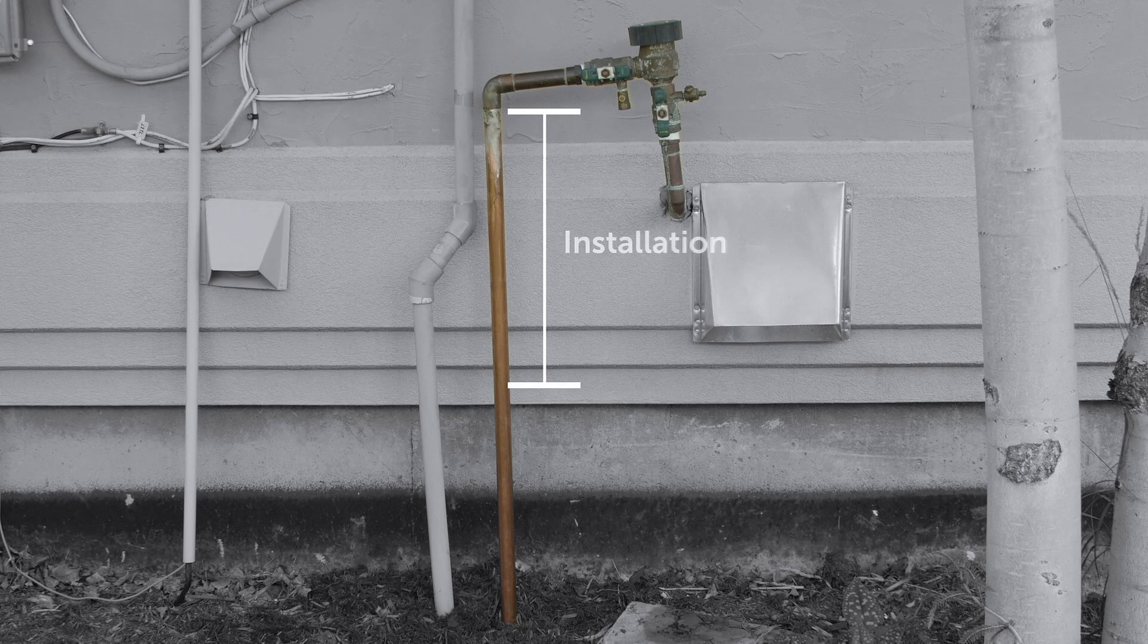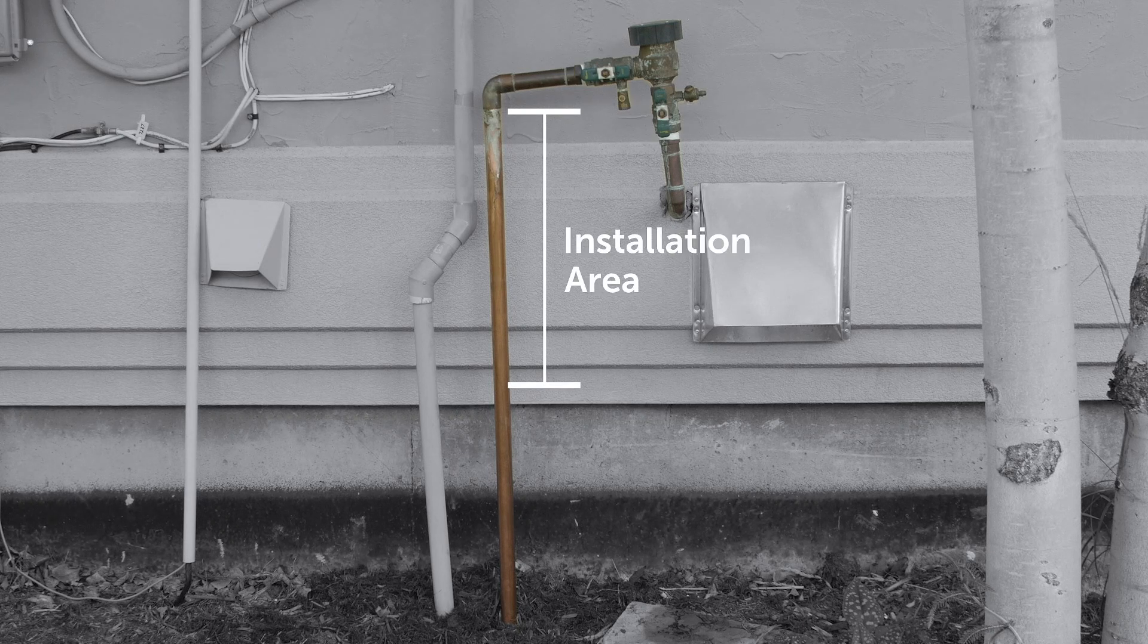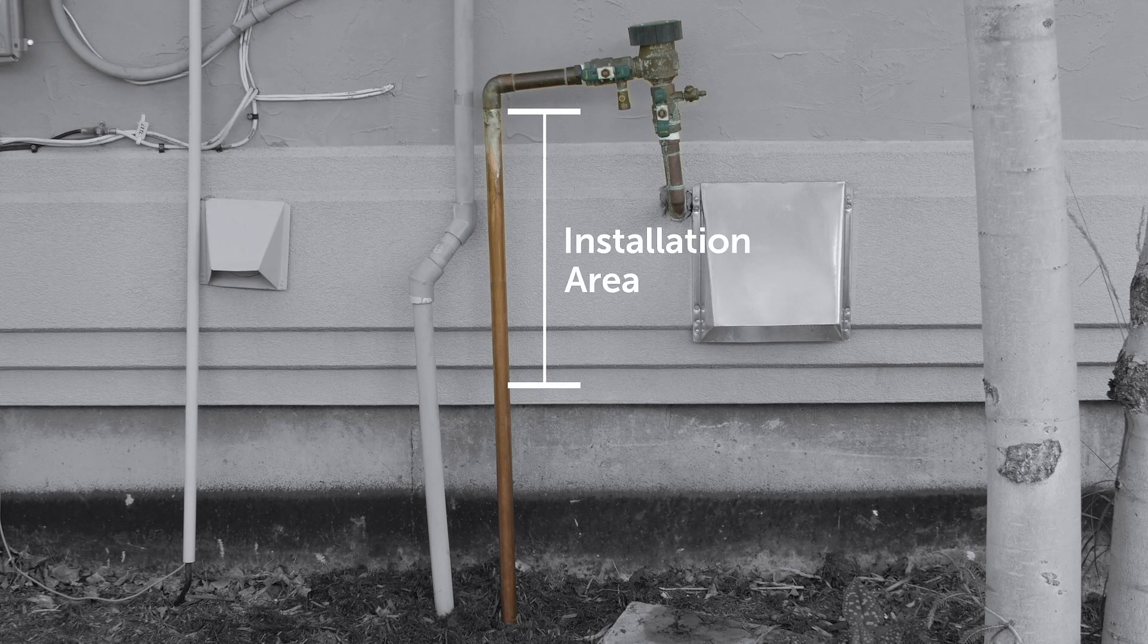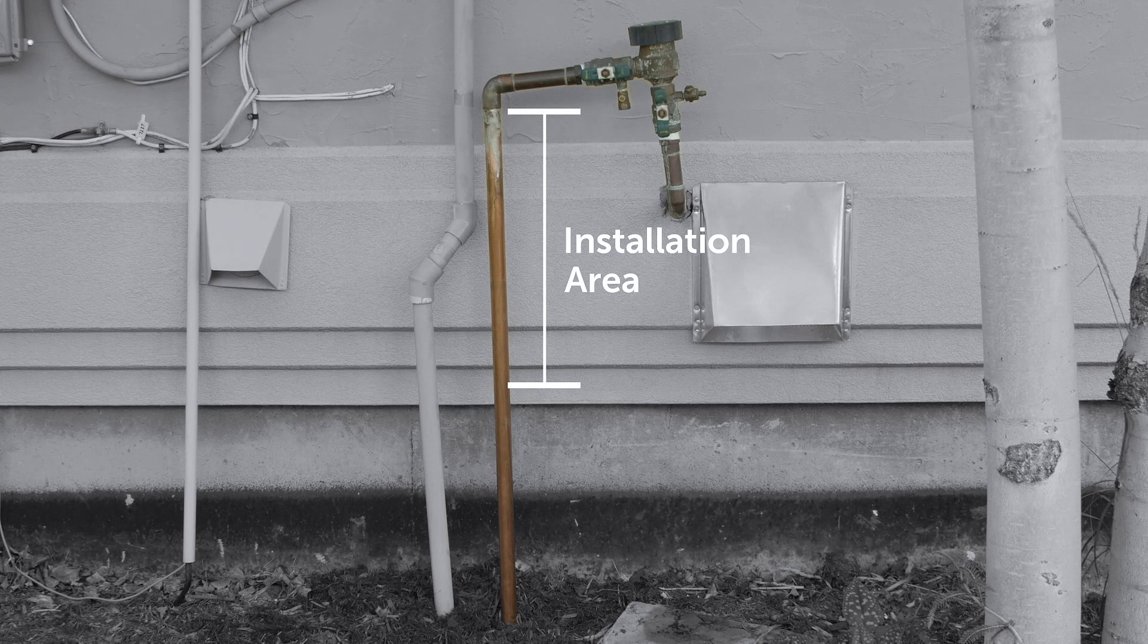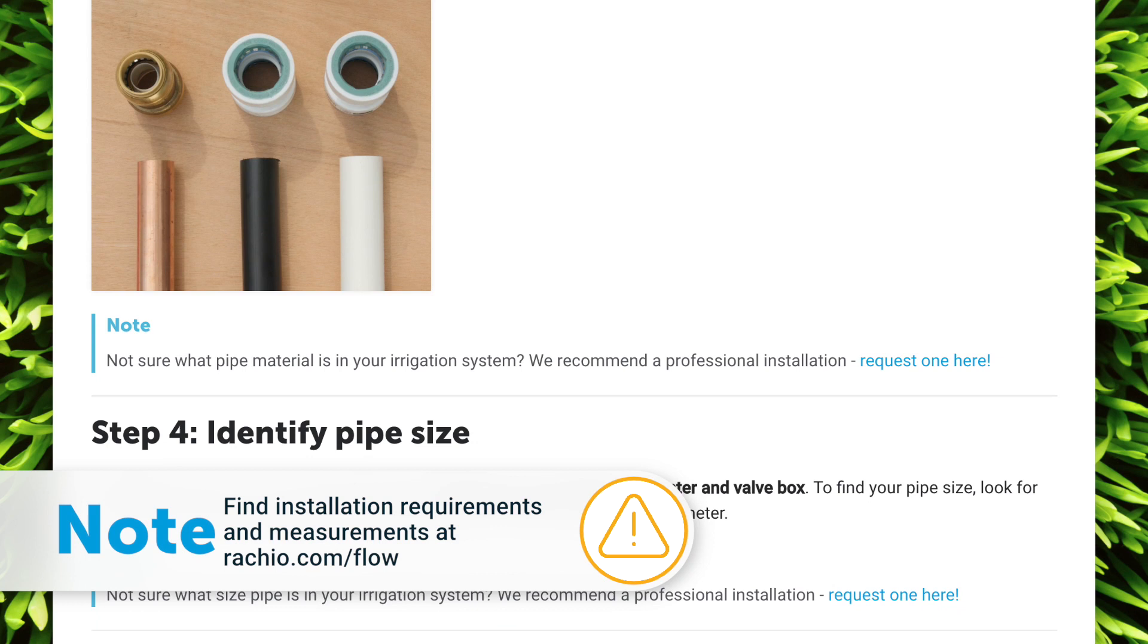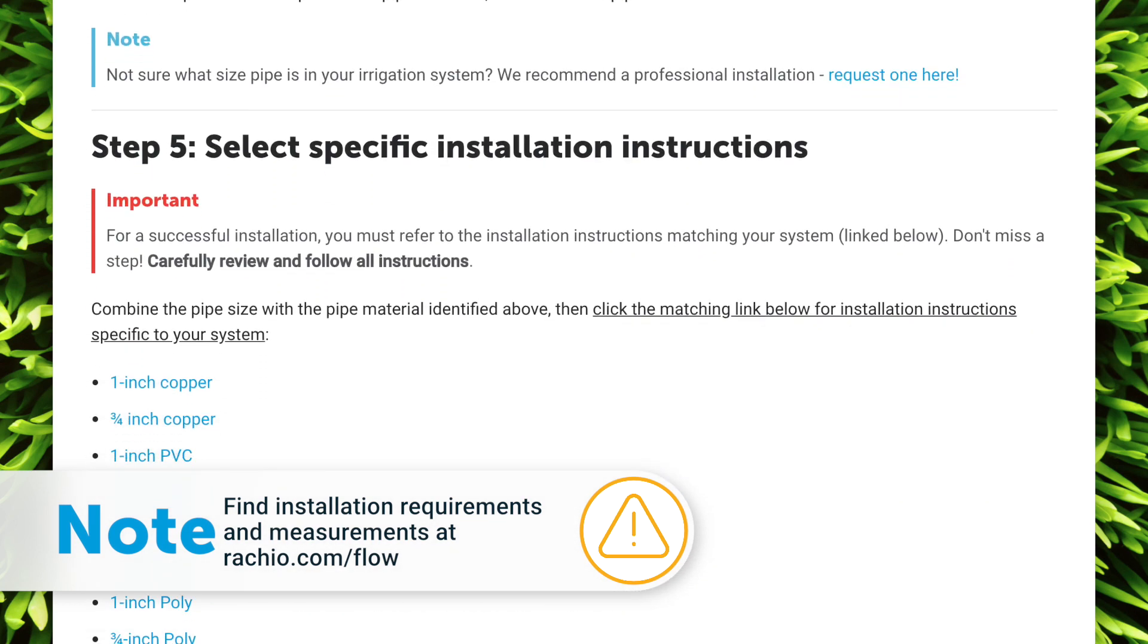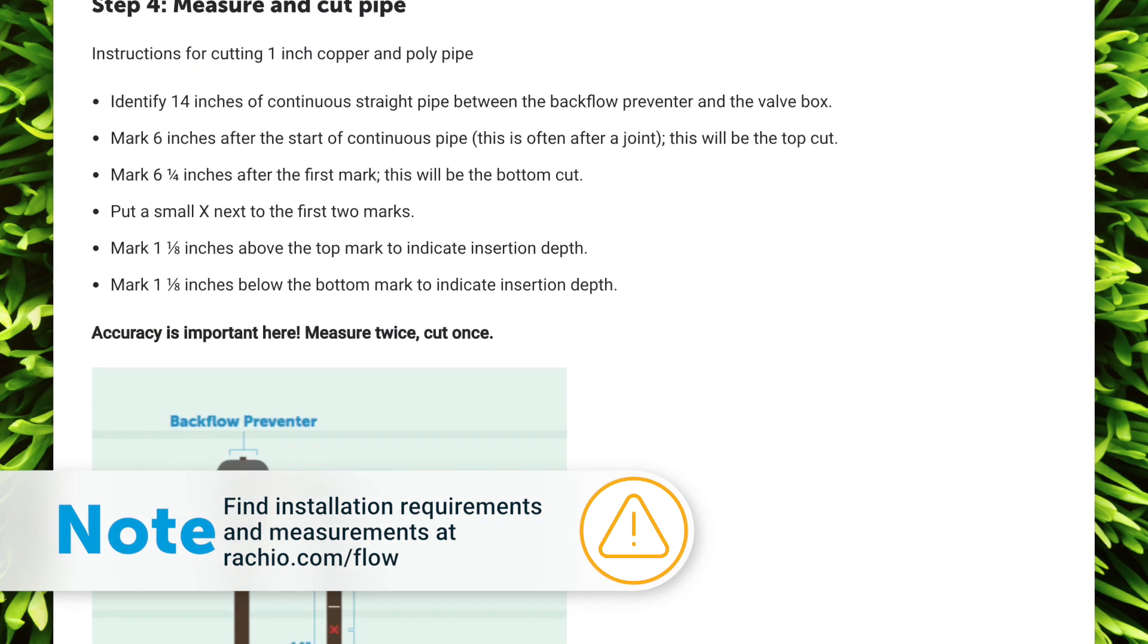Installation will require a minimum length of straight pipe between the backflow preventer and the valve box. The meter will not measure accurately if there are elbows or tees in this stretch of pipe. Find length requirements and other installation instructions for your size and type of pipe at Rachio.com/flow.